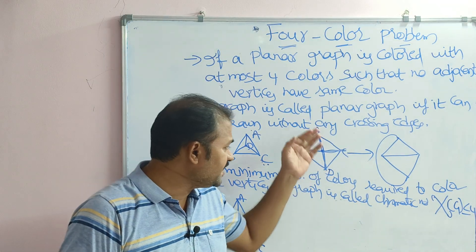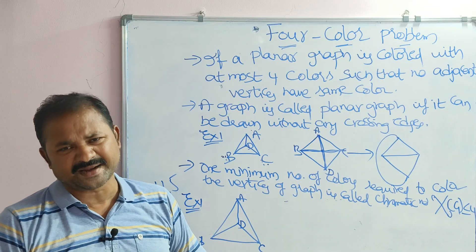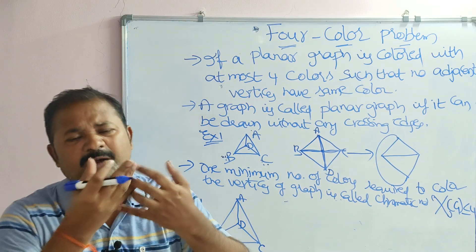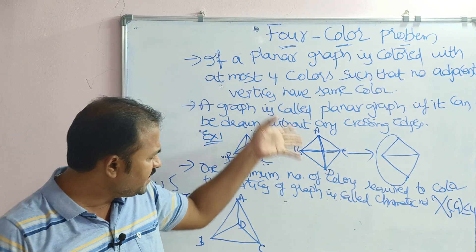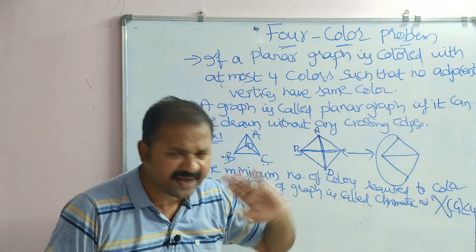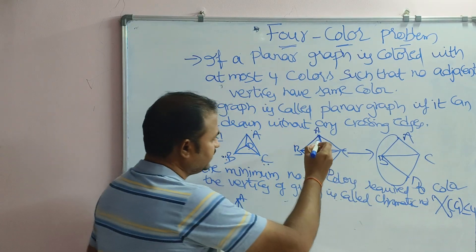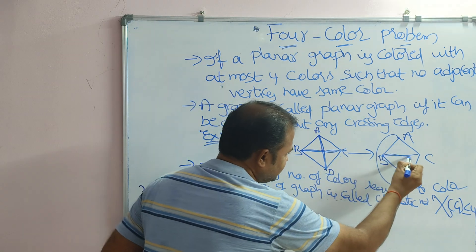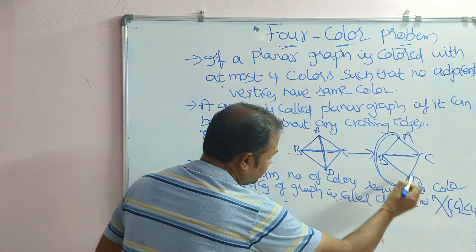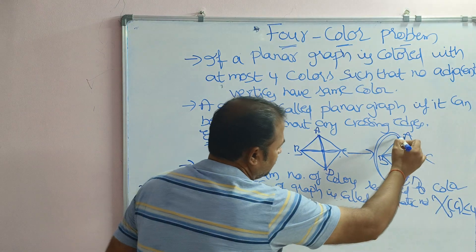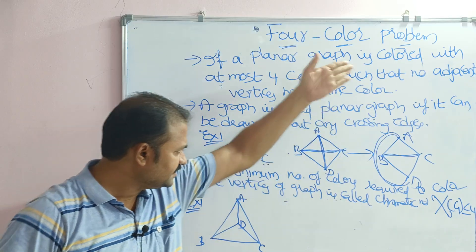We can convert some non-planar graphs into planar graphs, though for some it is not possible. For example, we can redraw this non-planar graph as a planar graph with vertices A, B, C, D. The edge from B to C is drawn here, and the edge from A to D can be drawn without crossing — either in this portion or another. So the edges are not crossing, making this a planar graph.